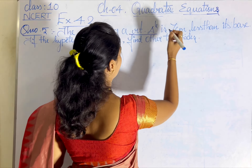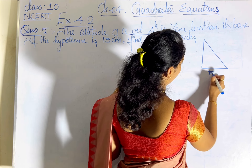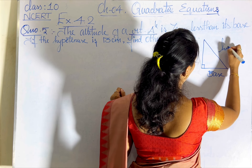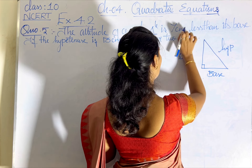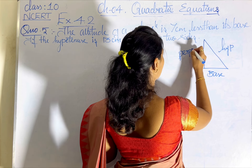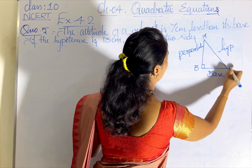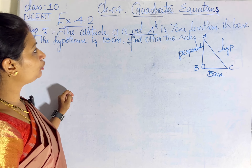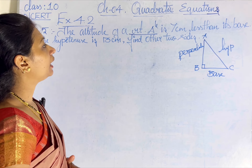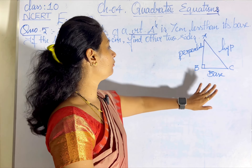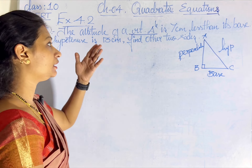The given problem is related to a right triangle, so let me draw a right triangle. You all know the parts of the right triangle — the base of the triangle, the slanting line which is the hypotenuse, and the side opposite to 90 degrees is called the perpendicular or the altitude. It is given that the altitude of the triangle is 7 cm less than the base.